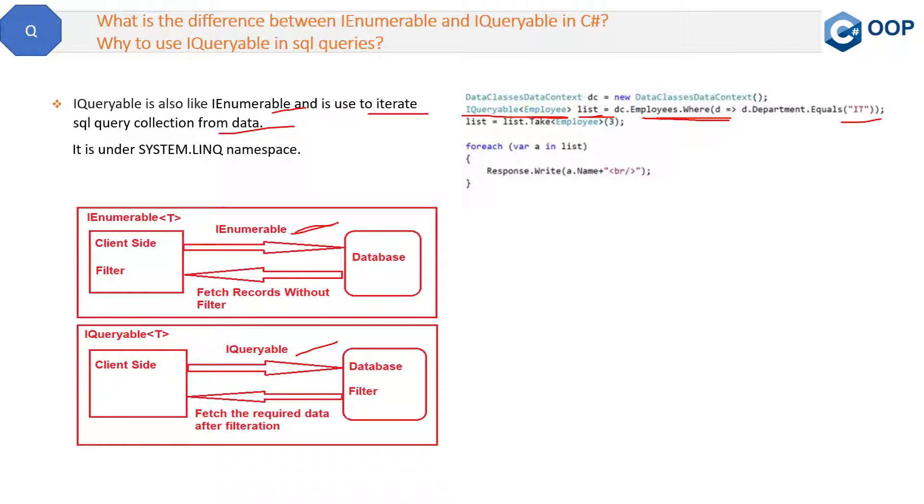then the request will go to the database and bring the whole data from the database, and then filter the result here at the client side, or I will say at the code side, not at the database level. So this